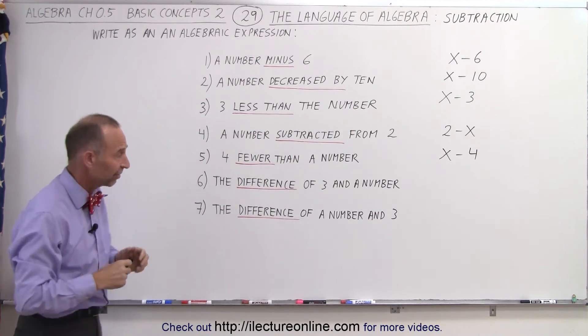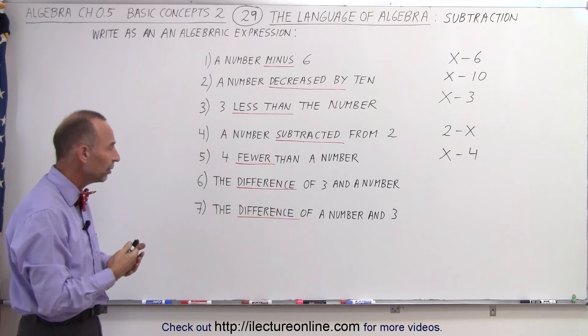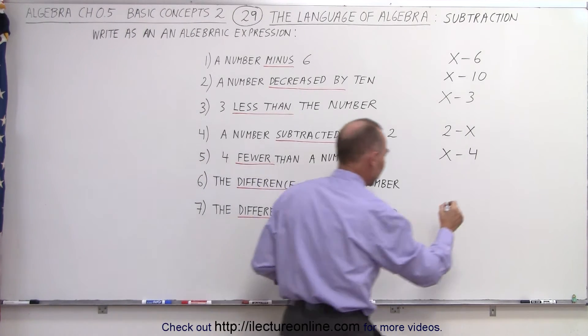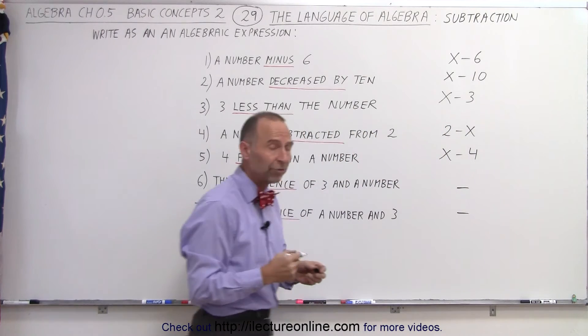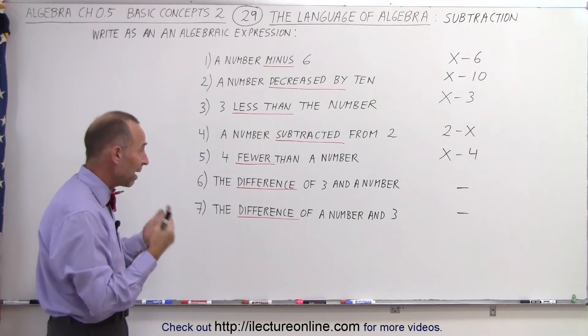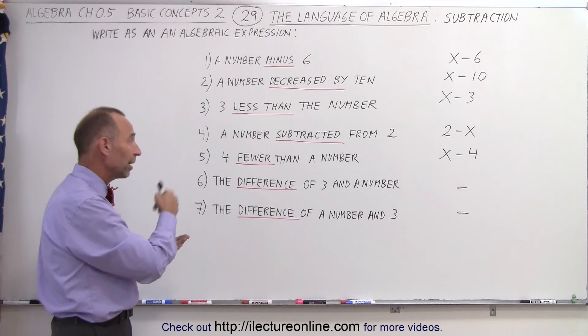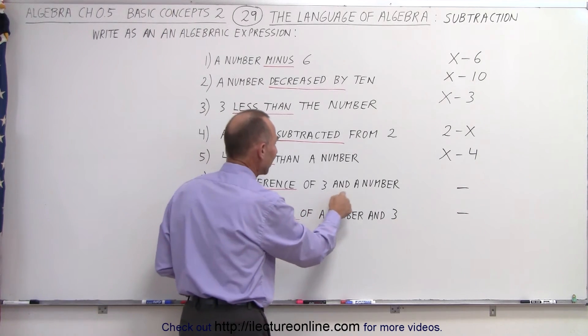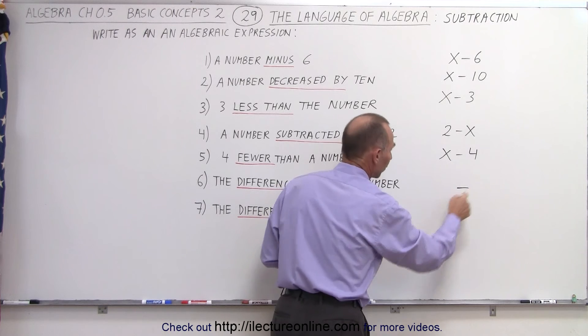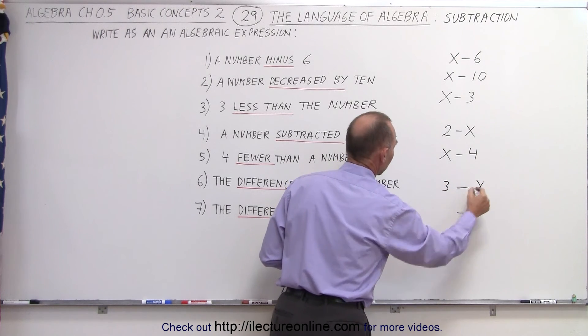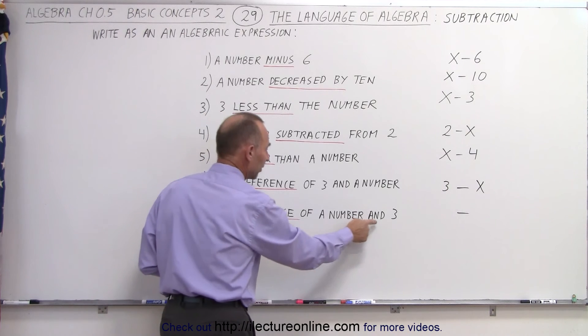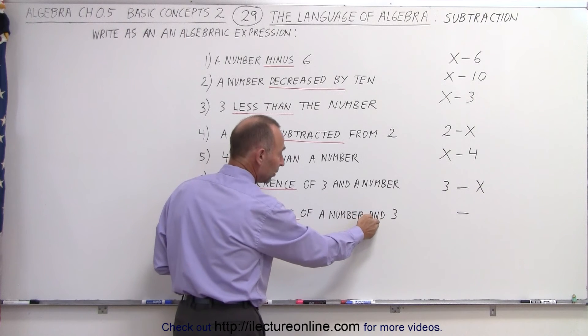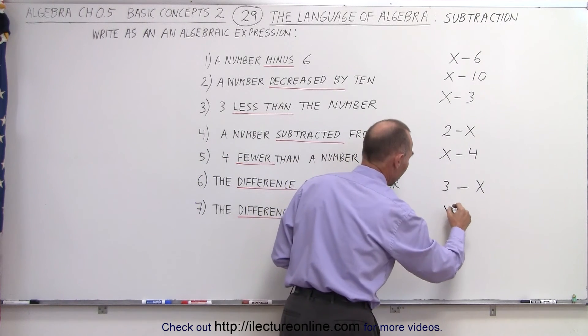And here we finally came to 6 and 7. The difference of 3 and a number. The difference of a number and 3. We know there's a subtraction there, so we'll put a negative sign in each case. But which is subtracted from which? Well, the easiest way to keep in mind is whatever comes first goes to the left of the negative sign. Whatever comes afterwards goes to the right. So here we have the difference of 3 and a number. The 3 goes here and the unknown number goes there. So we have 3 minus x. And when they write the difference of a number and 3, since the number is represented by x, the number comes first, goes to the left. 3 goes next, goes to the right of the negative sign. So it becomes x minus 3.